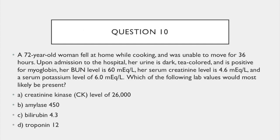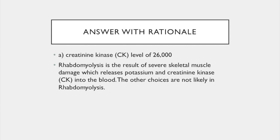Question 10. Using the same clinical presentation of question 9, which of the following lab values would be most likely present? A. A serum creatinine kinase level of 26,000. B. Amylase of 450. C. Bilirubin level of 4.3. Or D. A troponin level of 12. The answer is A: creatinine kinase level of 26,000. Rhabdomyolysis is a result of severe skeletal muscle damage, which releases potassium and creatinine kinase into the blood. The other choices are not likely in rhabdomyolysis.